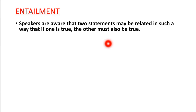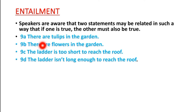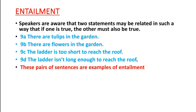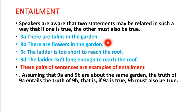The fourth aspect is entailment. Speakers are aware that two statements may be related such that if one is true, the other must also be true. For example, 9a: 'There are tulips in the garden' and 9b: 'There are flowers in the garden.' Assuming both sentences are about the same garden, if 9a is true then 9b must also be true, because tulips are a type of flower. However, if we say there are flowers in the garden, it does not necessarily mean there are tulips.